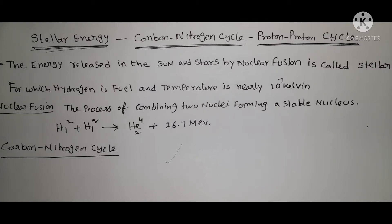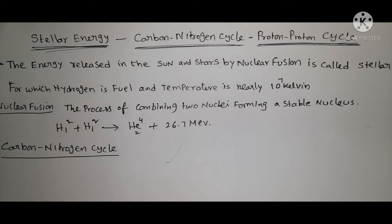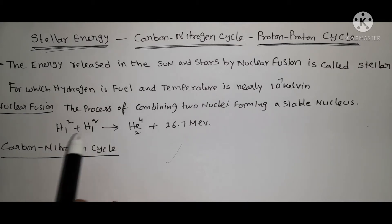First of all, you have to know what nuclear fusion is. Nuclear fusion means the process of combining two or more nuclei to form a heavy nucleus, or simply the process of combining two nuclei to form a stable nucleus. This occurs in the sun and stars: H-1-2 (deuterium) combines to give helium-2-4, along with energy released of around 26.7 mega electron volts.